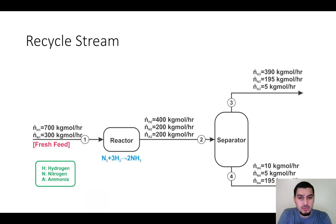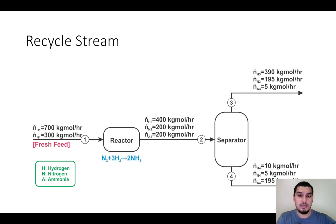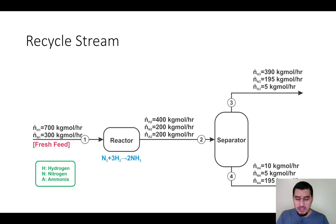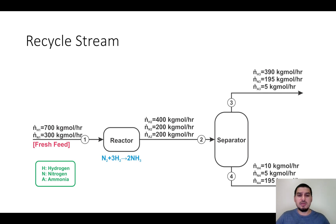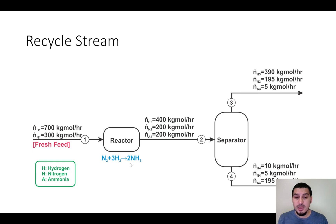We are going to discuss a case that we see a lot in chemical processes — it's common in almost all chemical processes. To understand this concept, we need to take a look at this flow sheet, which will be our demonstration example. We have hydrogen and nitrogen with known flow rates fed to a reactor where the reaction between hydrogen and nitrogen takes place, producing ammonia.